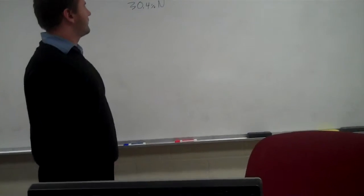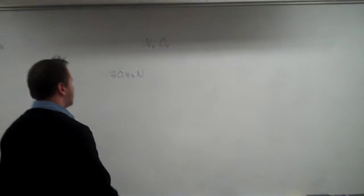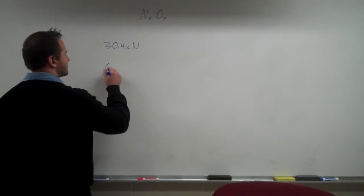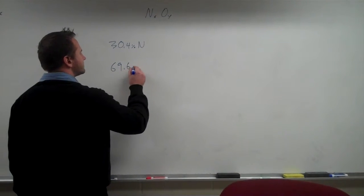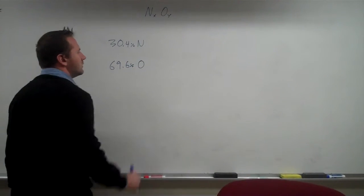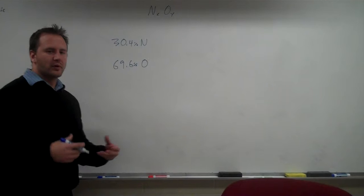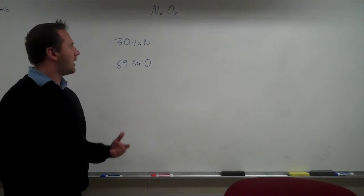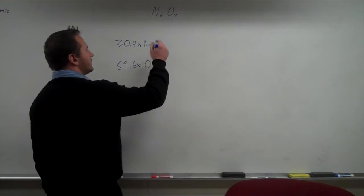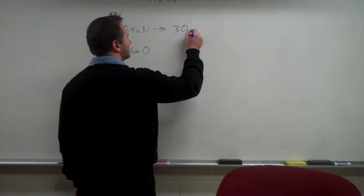If it's 30.4% nitrogen, we then know that it's 69.6% oxygen. When we're given percents, what we want to do is assume 100 grams of the sample. So we will simply convert these percents to grams.